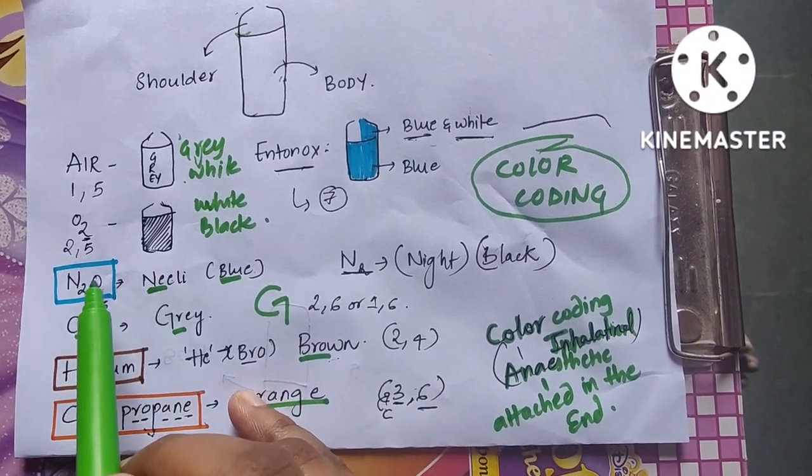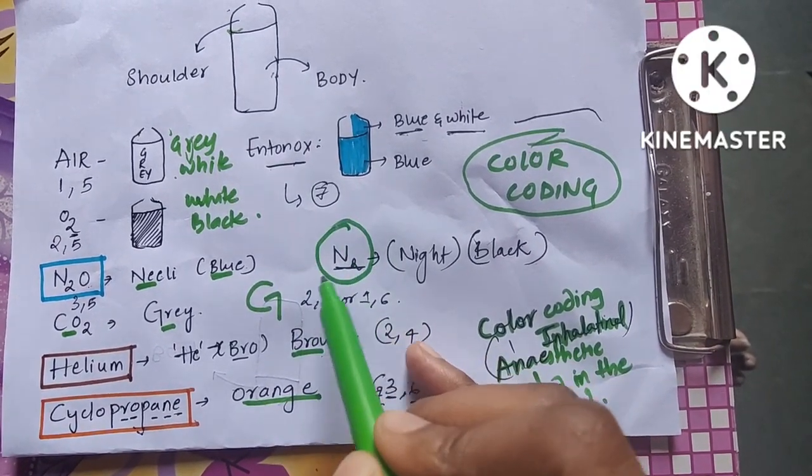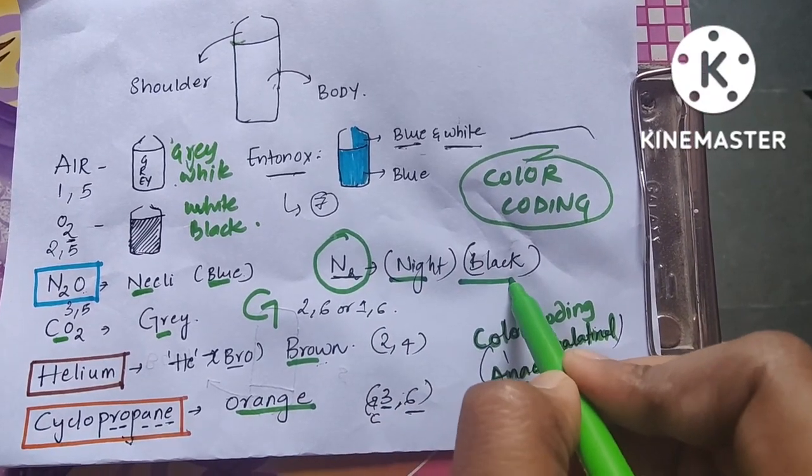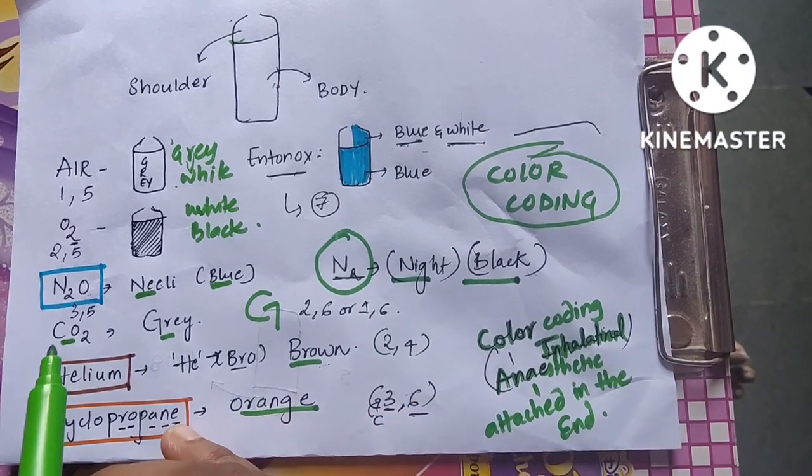Nitrogen is for night and black in color. Don't confuse nitrous oxide with nitrogen cylinder. Coming to carbon dioxide, you can make G out of C, so carbon dioxide is gray color.